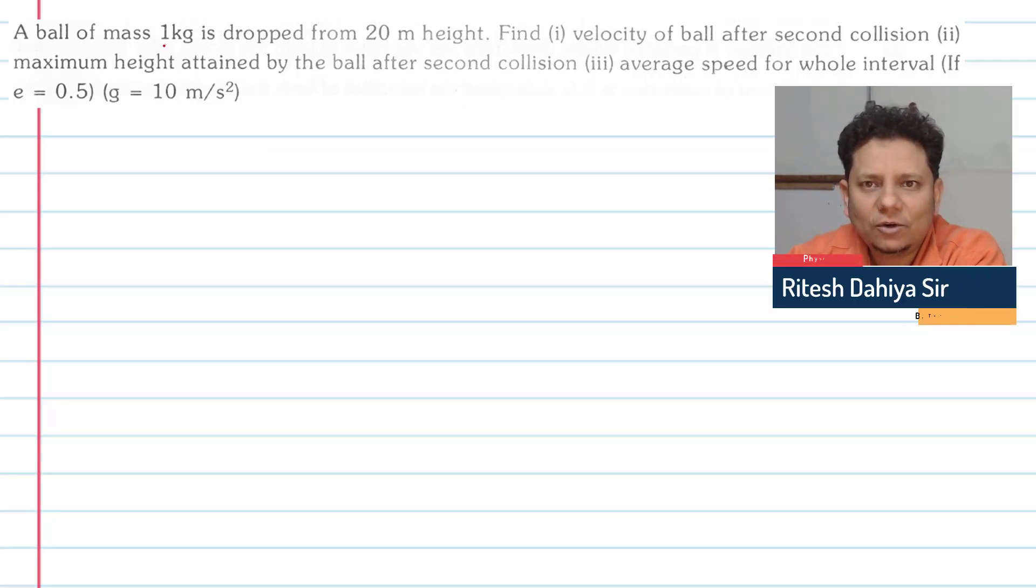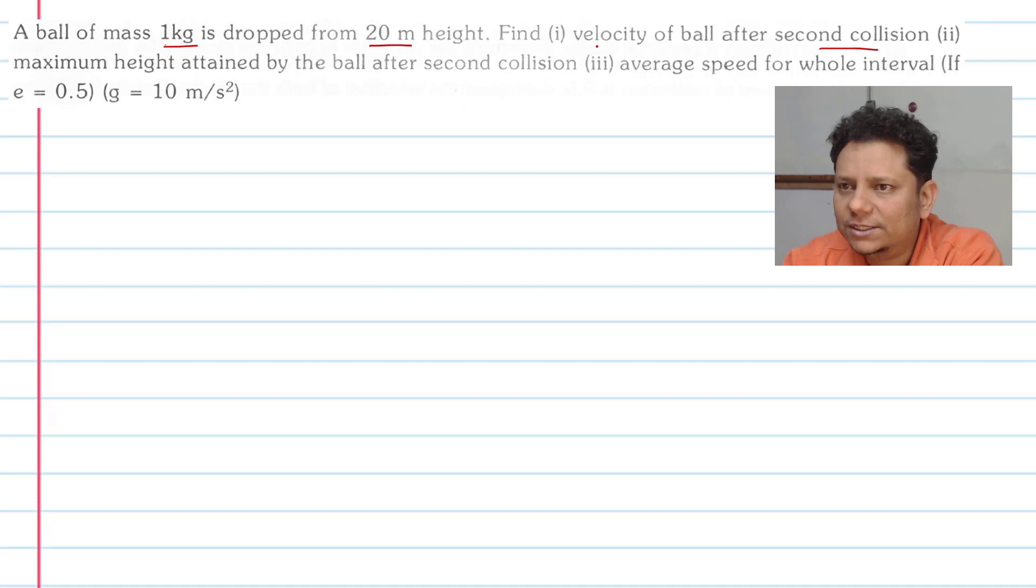Next question. A ball of mass 1 kg is dropped from 2 meter height. Find velocity of the ball after second collision. Second part is maximum height attained by the ball after second collision. Third part is average speed for the whole interval.